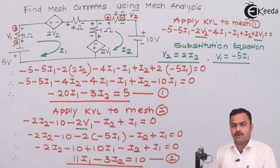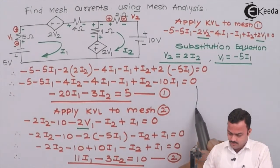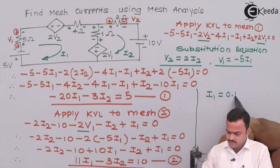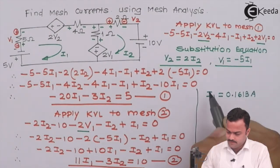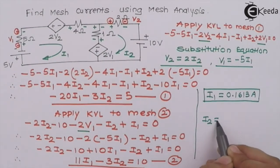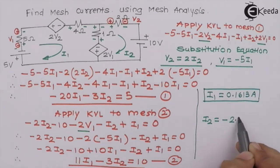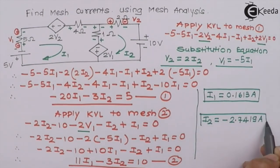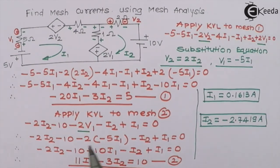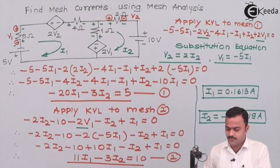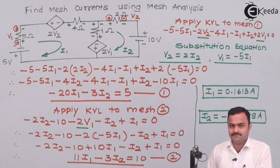We have two meshes, two currents, and two equations. Solving Equations 1 and 2 simultaneously gives I1 = 0.1613 amperes and I2 = -2.7419 amperes. The negative sign for I2 means the assumed clockwise direction needs to be reversed to anti-clockwise. This is the final answer for the problem.